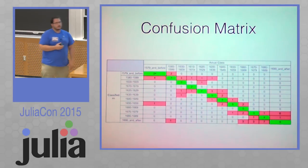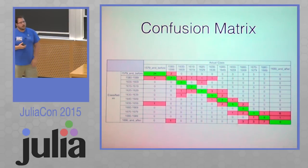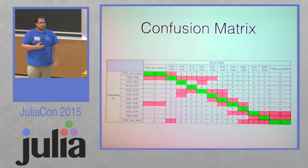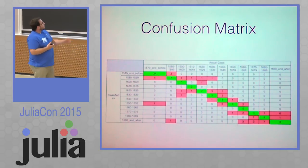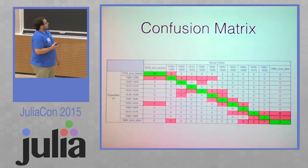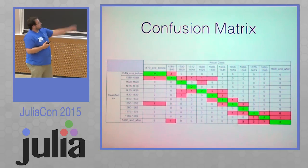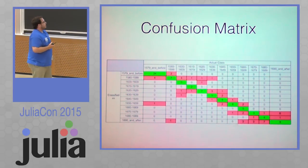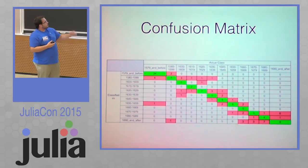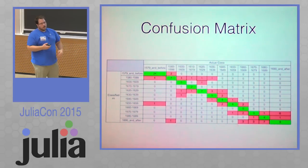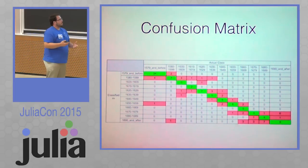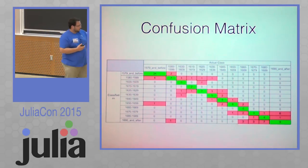With our classification, using 1% of the data, we were able to classify to a 60% accuracy. You can see our confusion matrix here, and along the trace are our correct classifications. The classifications we generally got wrong were a decade or two before or after. So even though we only had a 60% accuracy, a lot of those were really close to their time period.